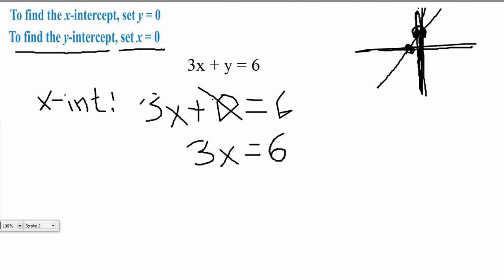And the only thing left to do here, I'm solving this equation for x, and since this is 3 times x, I'm going to do the opposite and divide both sides by 3. And on the left, it would cancel, dropping down the x is equal to, well, on the right-hand side, 6 divided by 3 is 2.